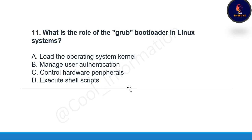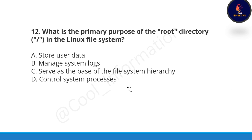We have covered half of the portion. Next question: What is the role of the GRUB bootloader in a Linux system? Option A: load the operating system kernel, Option B: manage user authentication, Option C: control hardware peripherals, Option D: execute shell scripts. The correct option is Option A, load the operating system kernel.